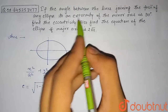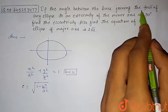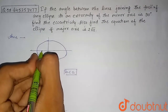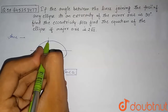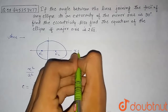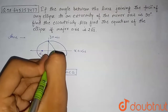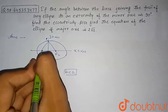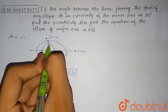In the question, it is given that the angle between the line joining the foci of the ellipse to an extremity of the minor axis is 90 degrees. So we locate the foci — let this be F1 and this be F2. The extremity of the minor axis is point P, since the major axis is the x-axis and the minor axis is the y-axis. The angle F1PF2 is given as 90 degrees.